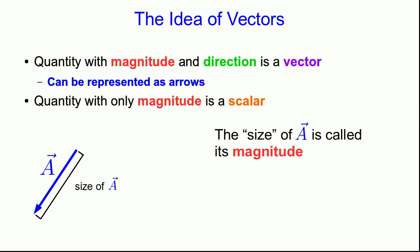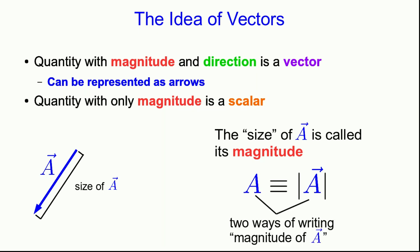Nonetheless, it has some size, which we call its magnitude, in whatever units that would be measured. And we represent the magnitude of A by simply writing A without the vector symbol on it. Or alternatively, we write the A vector inside absolute values. So these are two ways of writing the magnitude of A.